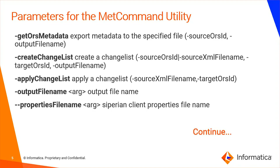Now we will discuss the parameters required to run the metcommand utility. The first parameter is get ORS metadata. This command exports the metadata to a specified file. Just like the export option available in the hub console for an ORS, you can export your change list via this command line. It exports the data in the form of a changelist.xml file.